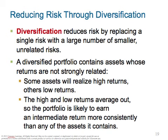We can reduce risk through diversification. Diversification reduces risk by replacing a single risk with a large number of smaller, unrelated risks. A diversified portfolio — say a stock and bond portfolio — contains assets whose returns are not strongly related. Some assets will realize high returns and some low returns. Some are conservative, some are more aggressive, but they offset each other. The high and low returns average out, so the portfolio is more likely to earn an intermediate return consistently.